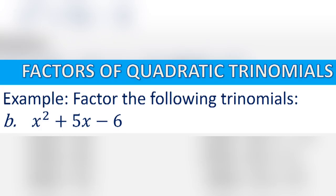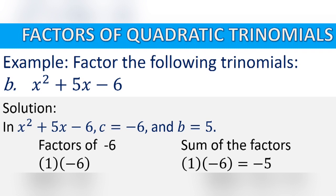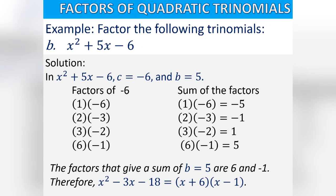Sample letter B: factor x squared plus 5x minus 6. Here C equals negative 6 and B equals 5. Factors of negative 6: 1 and negative 6, 2 and negative 3, 3 and negative 2, 6 and negative 1. The sum of 6 and negative 1 is 5, which matches B. Therefore, x squared plus 5x minus 6 equals the product of x plus 6 and x minus 1.